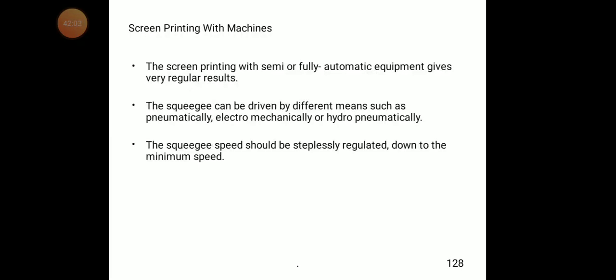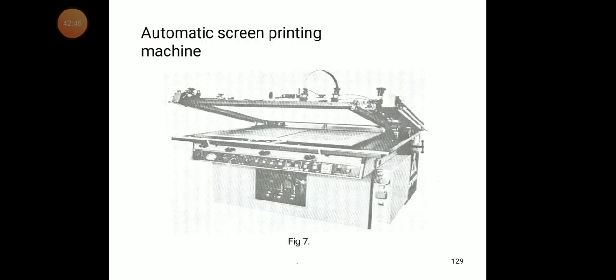Screen printing with semi or fully automatic equipment gives very regular results. The squeegee can be driven pneumatically, electromechanically, or hydro-pneumatically. The squeegee speed should be steplessly regulated down to the minimum speed. The machines are mostly supplied with an adjustable printing table, and automatically print the pattern on the screens.